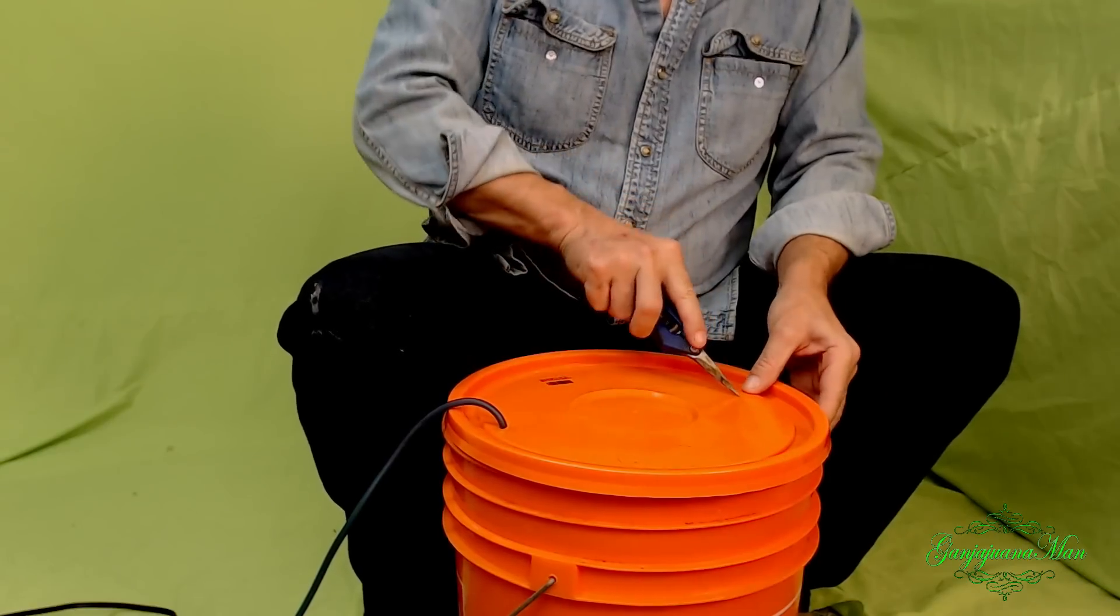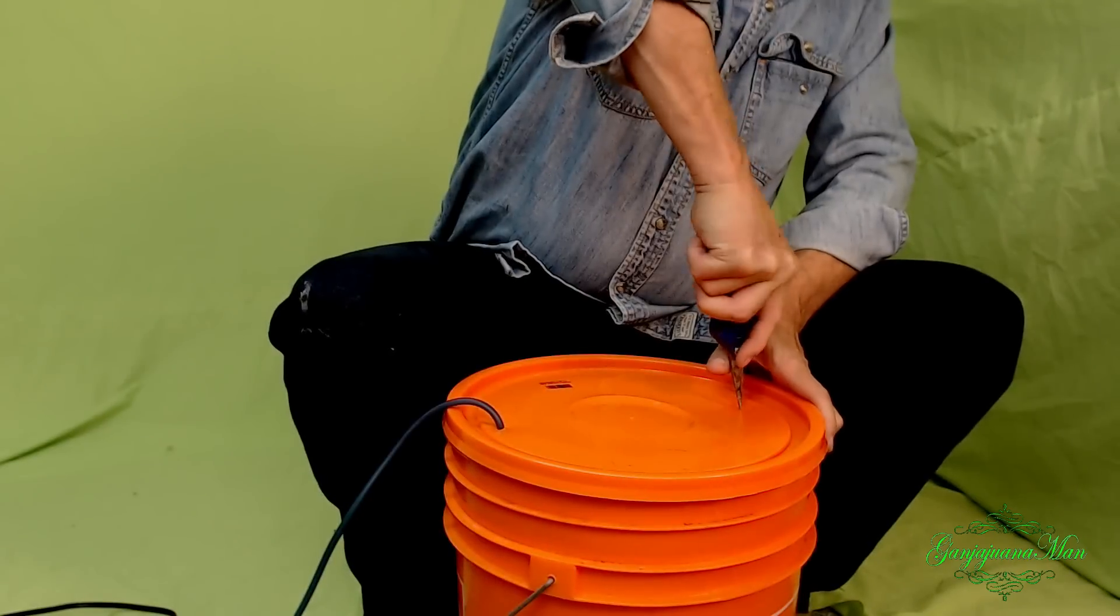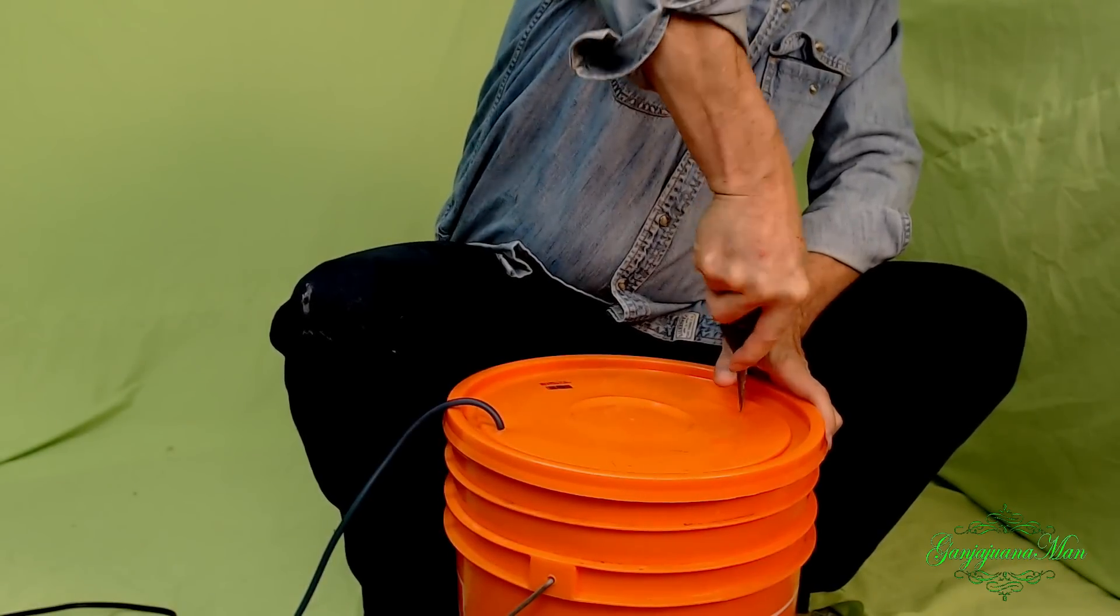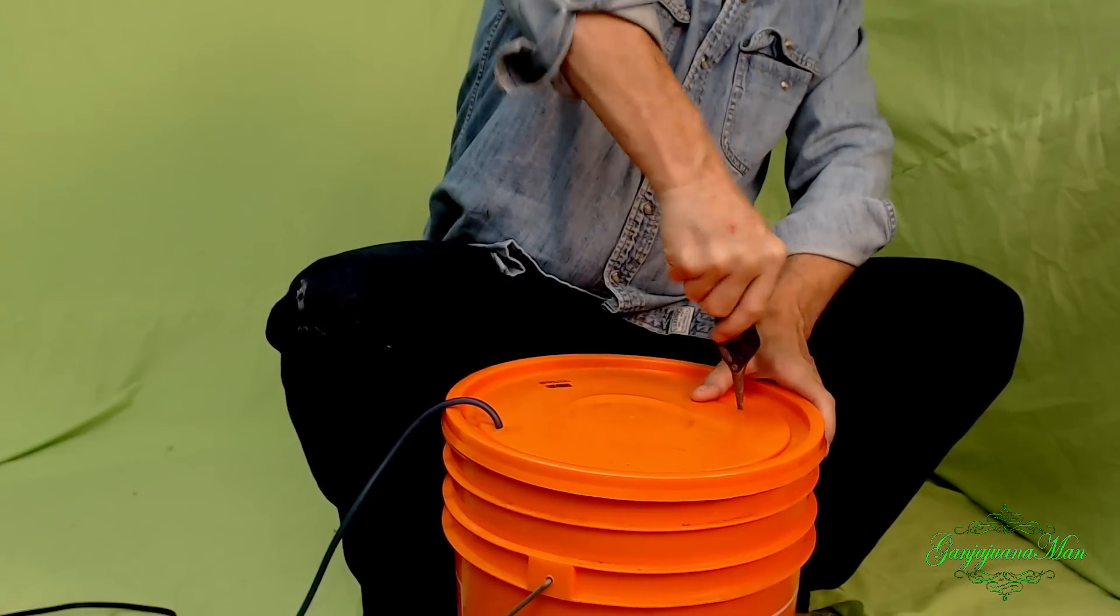We've got to make another hole. I'm going to put it on the opposite side. Again, go slowly so you don't make the hole too big, because if you don't have any silicone, then you're good, you don't need it.